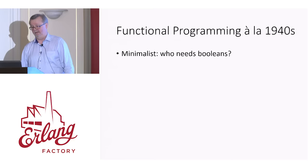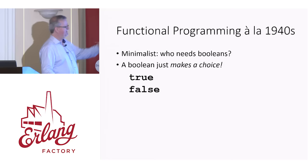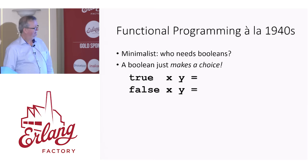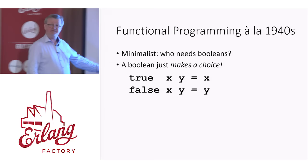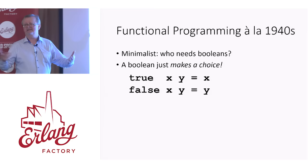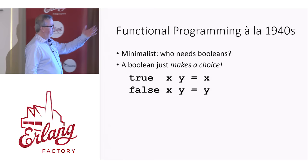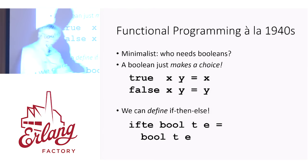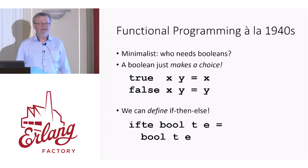If you're going to make a choice, you have to have two things to choose between. So let's give them two arguments. We'll say that true is the function that chooses its first argument, and false is the function that chooses its second. I'm going to use Haskell notation here for a lot of the talk. So this is just a function with two arguments, x and y, returning x. If we define Booleans like this, then we can define if-then-else as a function. It takes a Boolean and a then branch and an else branch, and it just calls the Boolean to make a choice between the then and else branches. So we don't need Booleans.